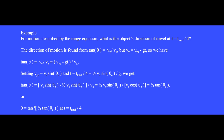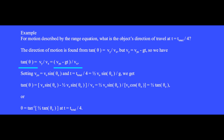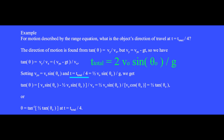For motion described by the range equation, what is the object's direction of travel at t equal t_total over 4, where t_total is the total duration of the flight in seconds? Relative to the positive x axis, the direction of motion is always found from tan theta equals v sub y divided by v sub x. We know that v sub y equals v sub y zero minus g t, so we have tan theta equals v sub y zero minus g t divided by v sub x. This is the y component of the initial launch velocity, which we set to v sub zero sine theta zero, and we set t to be t_total over 4. We determined that t_total was 2 v zero sine theta zero over g.